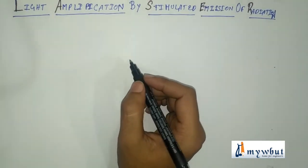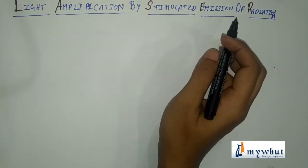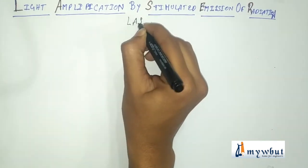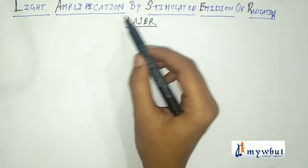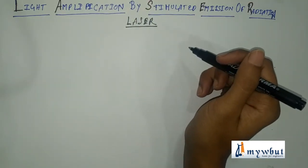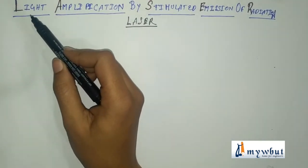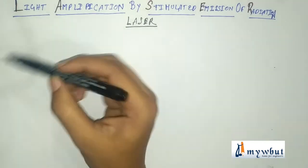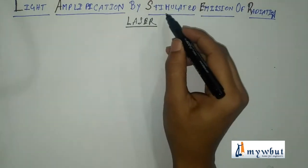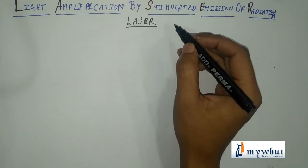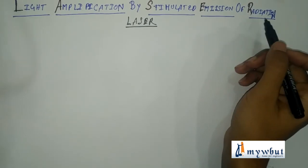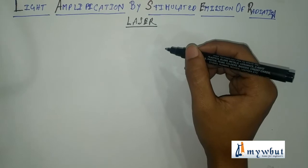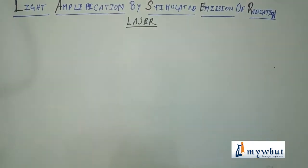Welcome to our new video where we'll be studying about light amplification by stimulated emission of radiation, commonly called laser. This is the full form of the word laser. Let us understand it word by word. Light refers to transverse or EM waves. Amplification of light occurs by the method of stimulated emissions, which are not natural but stimulated. Since they are EM waves radiated from a source, this process is known as laser.